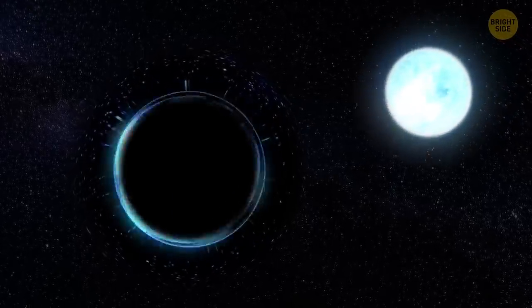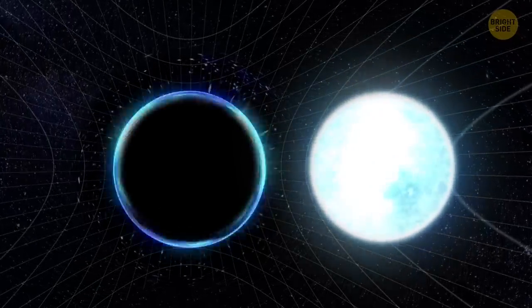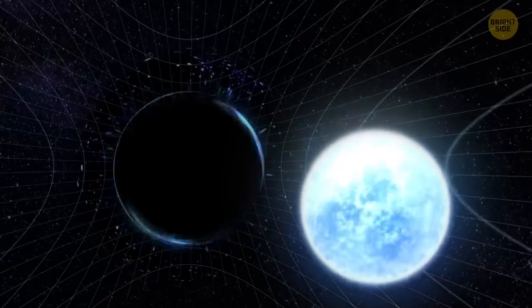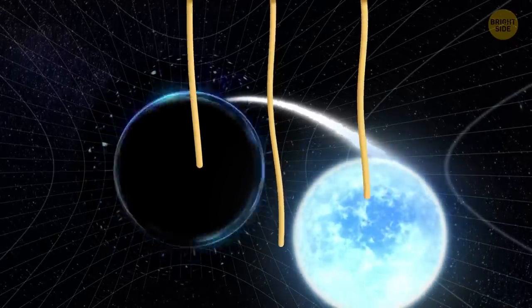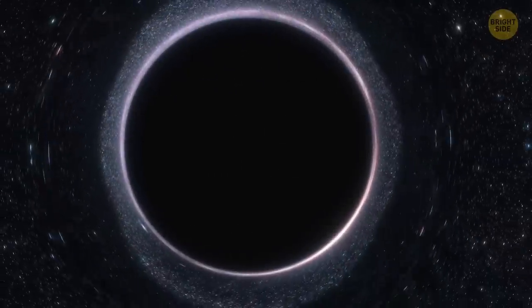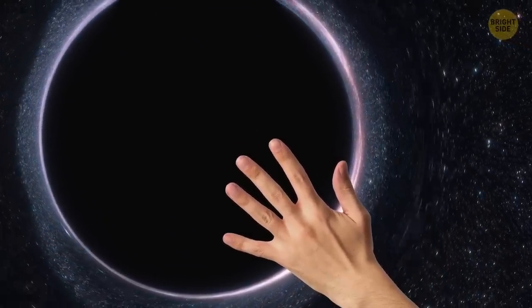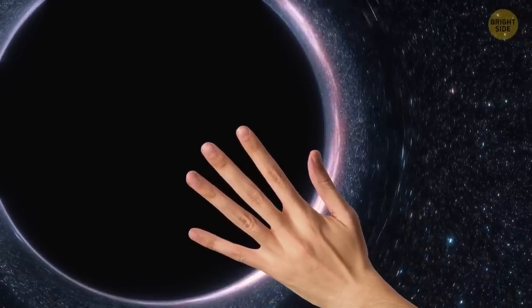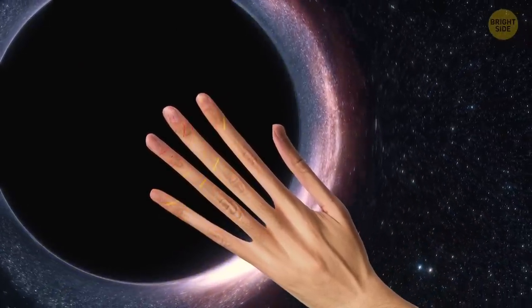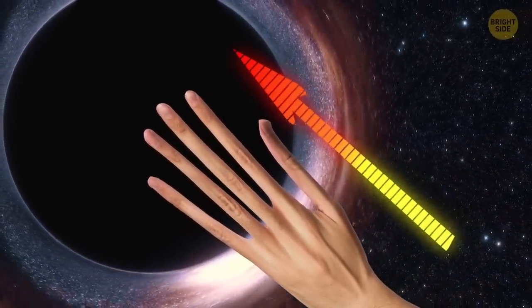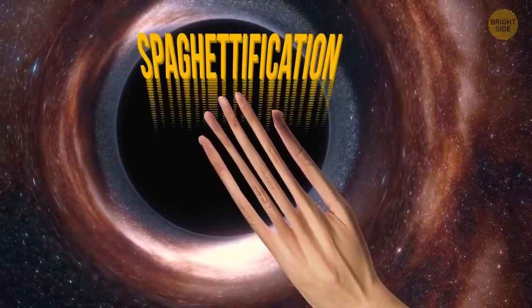As soon as a star enters the gravitational field of a black hole, it has no chance. At first, it tries to resist the pull of the black hole. Still, the star's outer layers begin to stretch toward the black hole, just like spaghetti. This is due to a powerful force of attraction. If you had the opportunity to extend your hand toward the black hole, you would see your fingers begin to stretch and elongate. This is because the force of attraction increases with every inch. Therefore, it acts stronger on your fingers than on your arm. That's why this process of pulling objects into a black hole is called spaghettification.